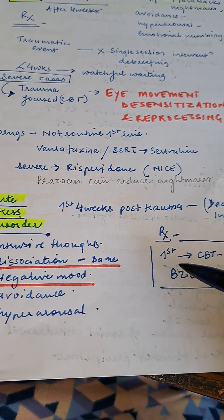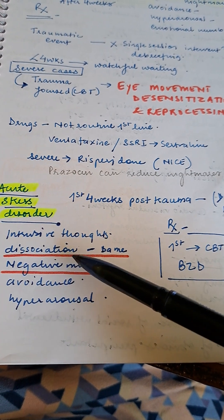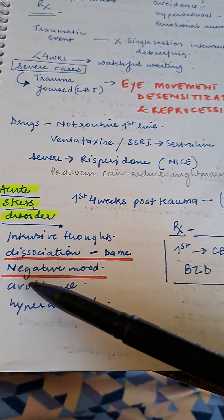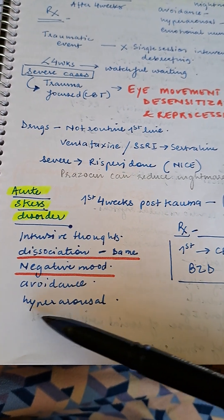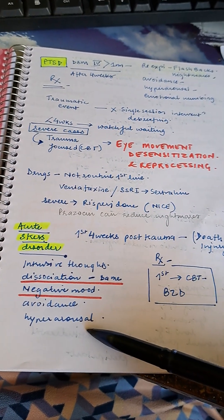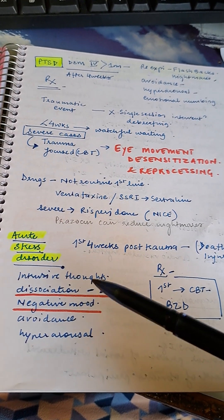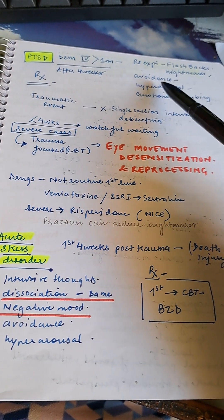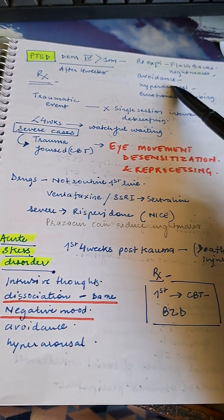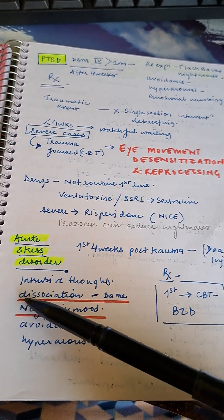Acute stress disorder occurs in the first four weeks post-trauma. It can involve witnessing death or injury. Treatment is first CBT, then second line benzodiazepines. Symptoms include intrusive thoughts, dissociation, negative mood, avoidance, and hyperarousal. These are similar to post-traumatic stress disorder, but the additional symptoms are dissociation.